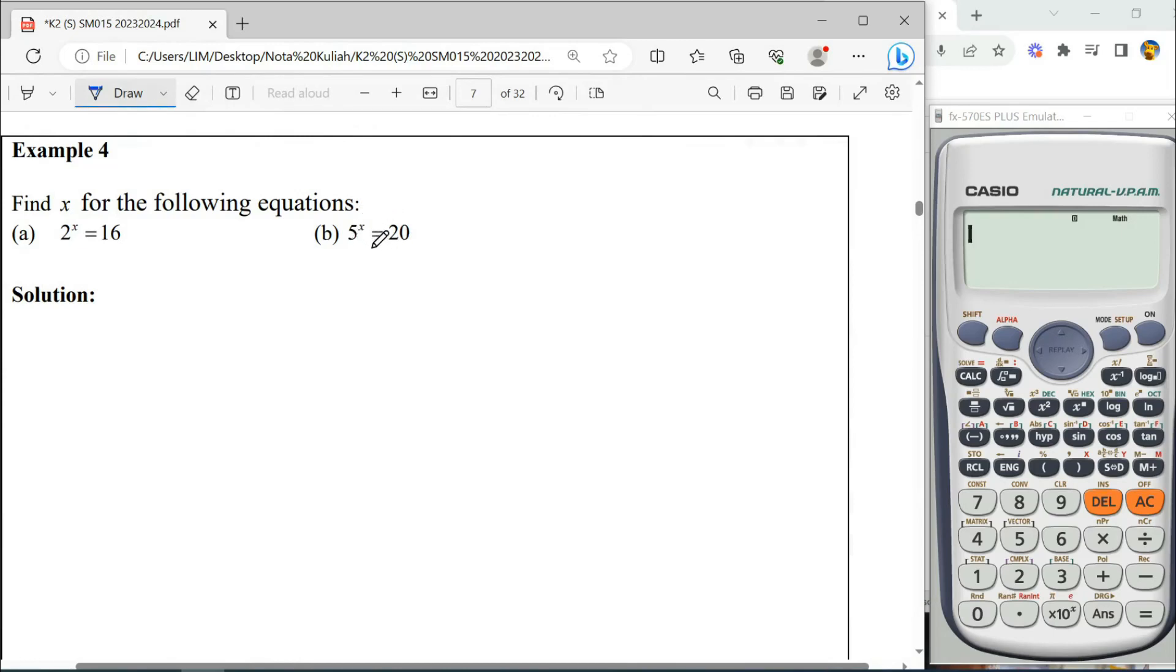For the following equation, if you want to find x where this x is in the power, first we have to see this indices is in base 5 and then we'll try to see this value 20. It cannot change to the indices in base 5, so we are in the situation not having the same base.